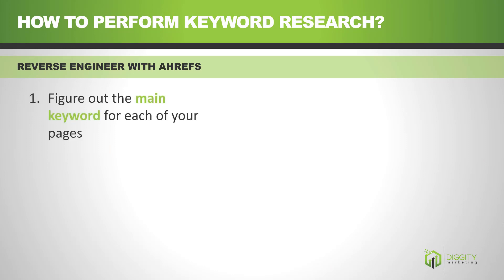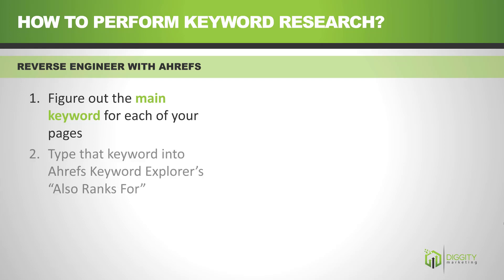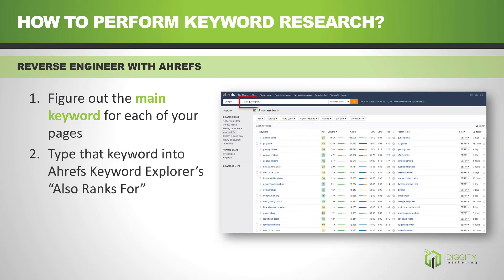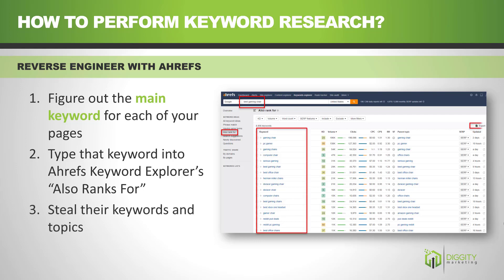Step one: you need to figure out the main keyword for your page. Ask yourself what your page is about — 'best gaming chair'. Good. Next, type that keyword into AATrust's 'also ranks for' feature. What that does is look up all the pages on page one and tell you every single keyword that all these pages rank for — all of them. Export, and you're done.